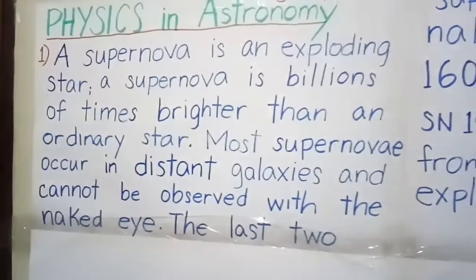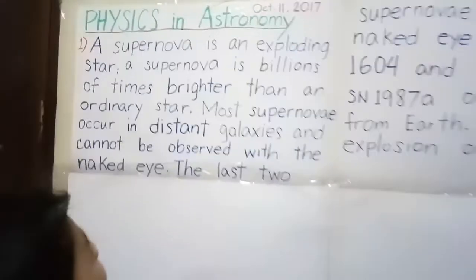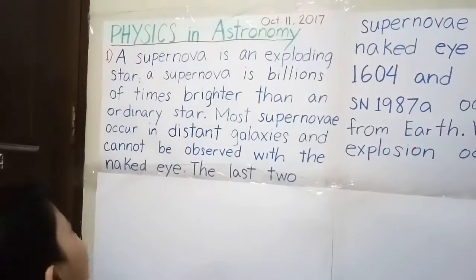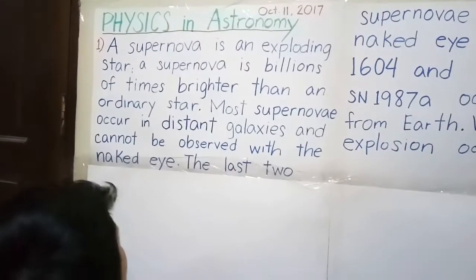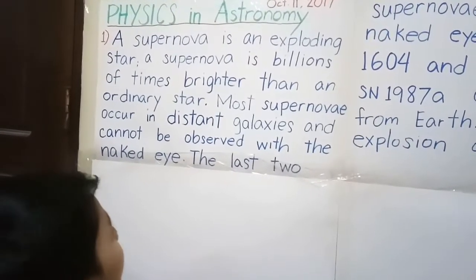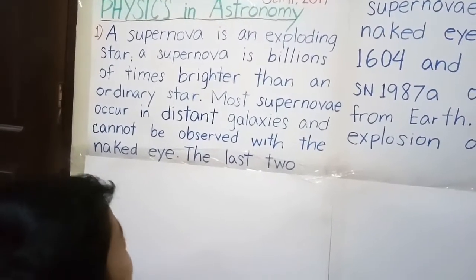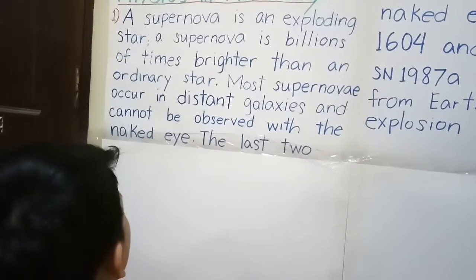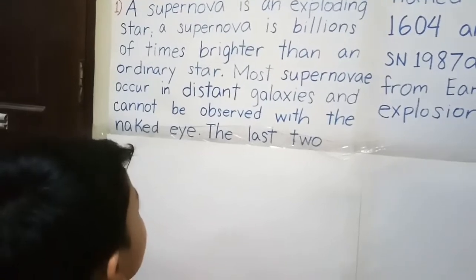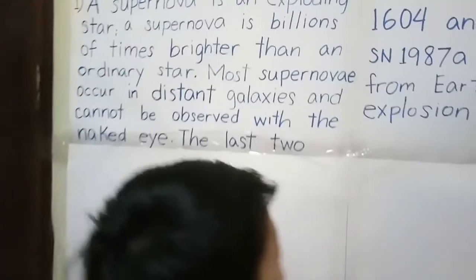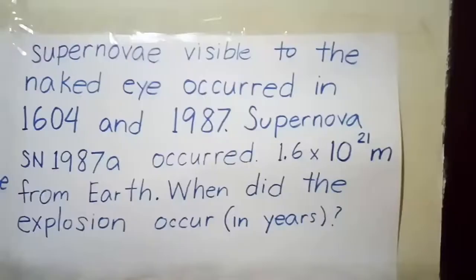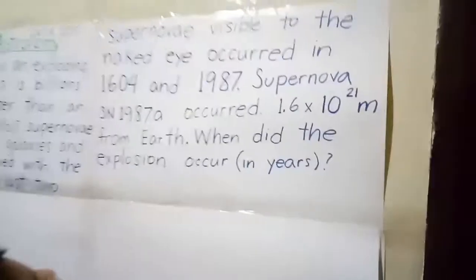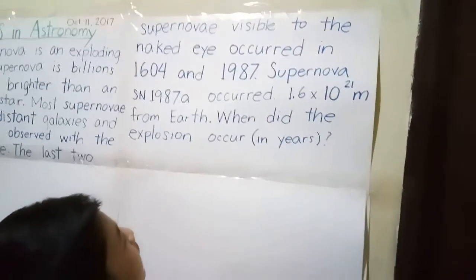A supernova is an exploding star, billions of times brighter than an ordinary star like our sun. Most supernovae occur in distant galaxies and cannot be observed with the naked eye. The last two supernovae visible to the naked eye occurred in 1604 and 1987.